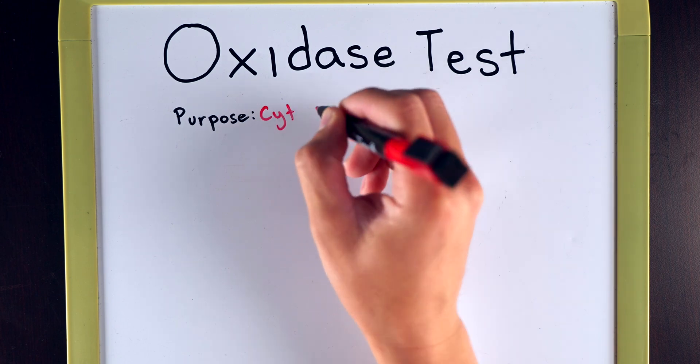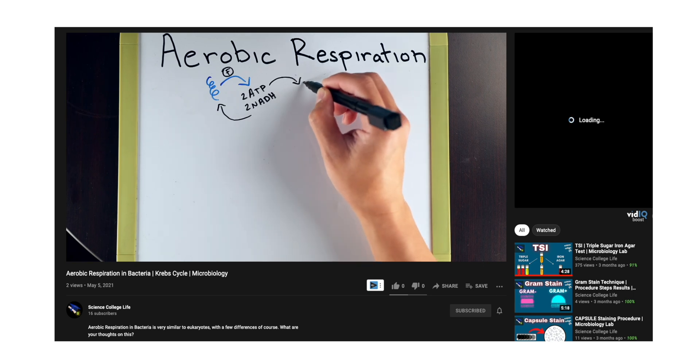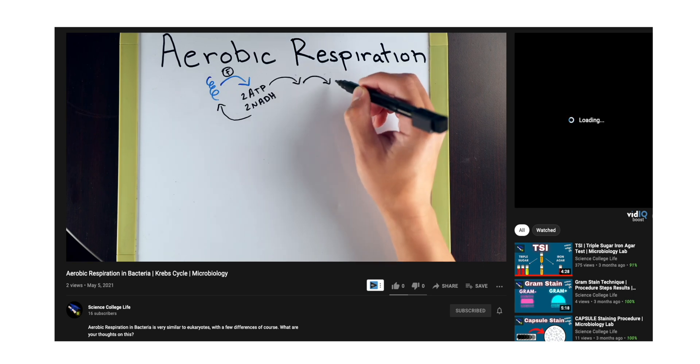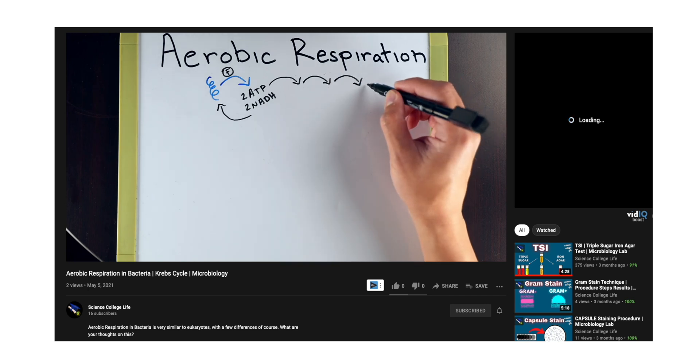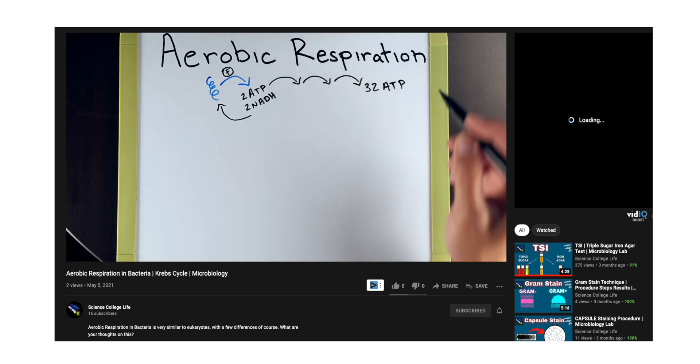If you remember back to a previous video in which we covered aerobic respiration, you'll remember that there's a series of cascade events that happen in order for bacteria to gain 32 ATP. One of the key components in that cascade of events is cytochrome C. Without it, there's no way that the bacteria can transfer enough electrons to generate that much ATP.